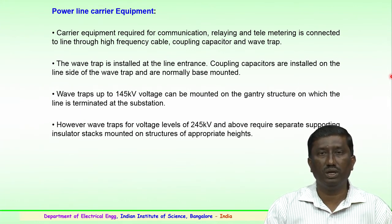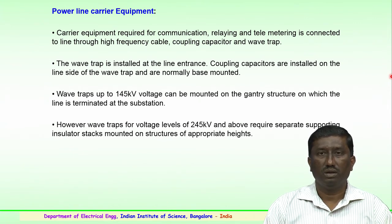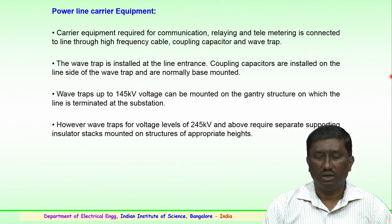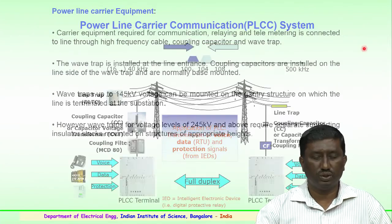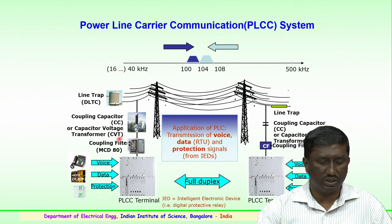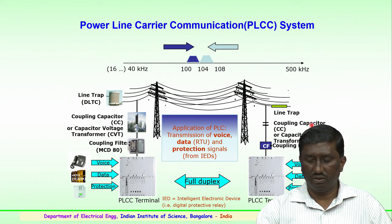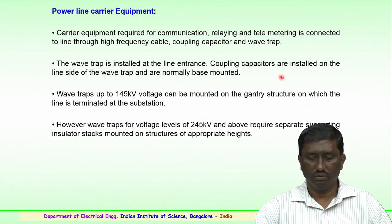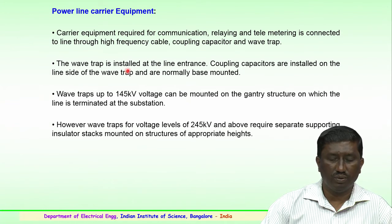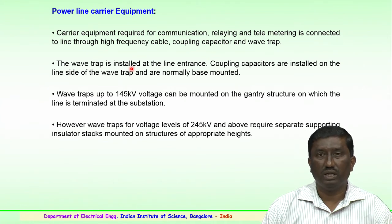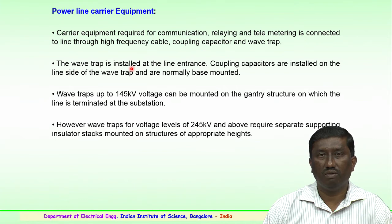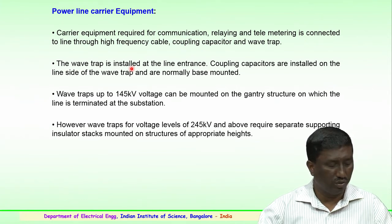The carrier equipment required for communication, relaying circuit, and telemetry is basically connected to the line through a high frequency cable, coupling capacitor, and a wave trap as shown here. This is connected through the coupling capacitor, a coupling filter, and through the line or wave trap. This wave trap or line trap is installed at the line entrance in the substation, and the coupling capacitors are installed on the line side of the wave trap and are normally base mounted as shown here.